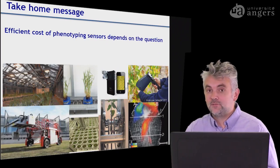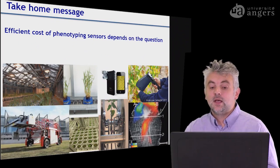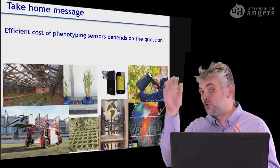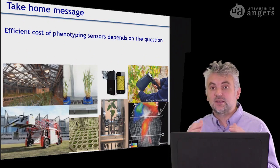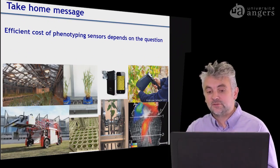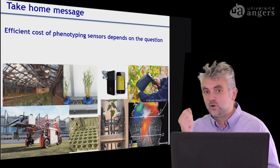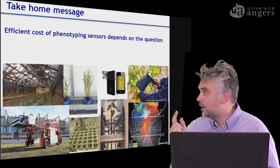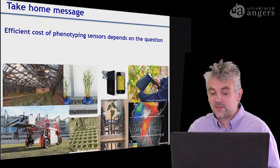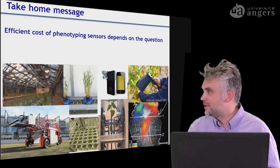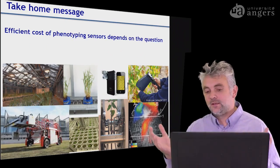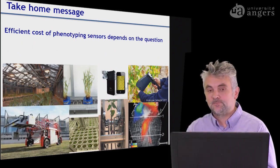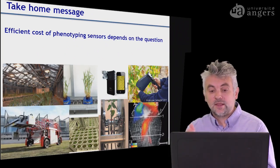The take-home message of this full series of videos is that each individual element choice in the computer vision pipeline is very important if you want to decrease the price of your system. Efficient cost of phenotyping sensors depends on the questions. If you know your question, you can decrease the price of your system — ranging from a one-million-euro system down to a hundreds-of-euros system. There is room for all of these tools depending on the variety of questions raised. Thank you for your attention, and see you later in the course to study various low-cost systems.